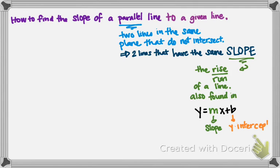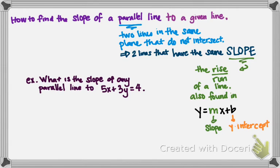Sorry, that's the slope and that's the y-intercept. So here's an example. What is the slope of any parallel line to 5x plus 3y equals 4?